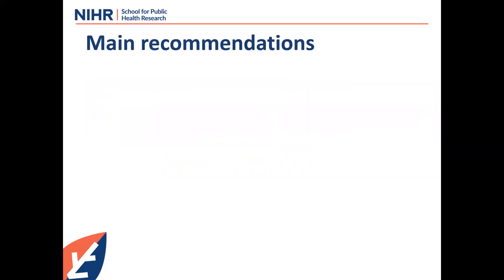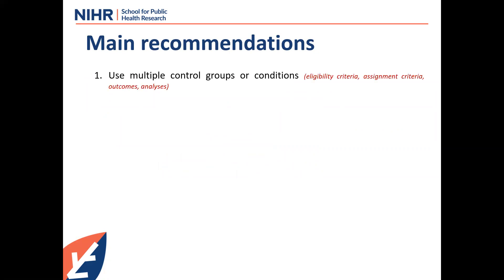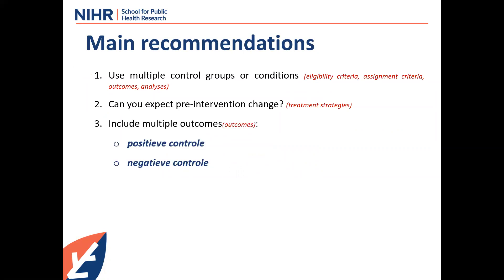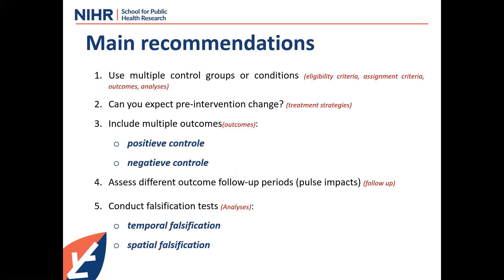Summarizing the main things to think about for natural experiments: use multiple control groups or conditions, feeding directly into eligibility criteria, assessment criteria, outcomes, and analysis. Can you expect any pre-intervention changes? Try to include multiple outcomes, especially positive and negative controls if possible. Assess different outcomes and do different follow-up periods to see if there's any evidence of pulse impacts. And very importantly, conduct falsification tests — both temporal and spatial falsification.